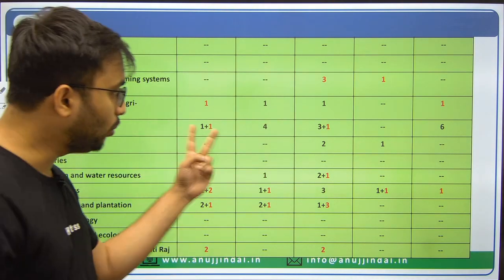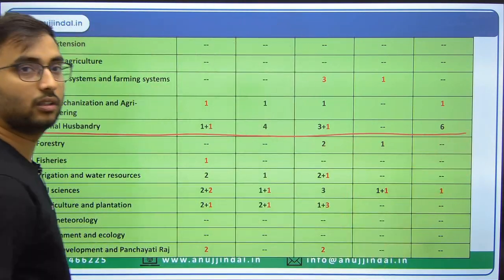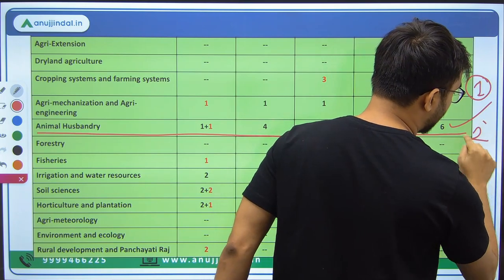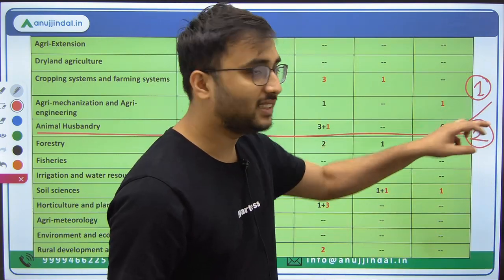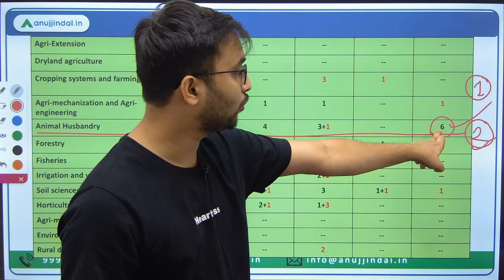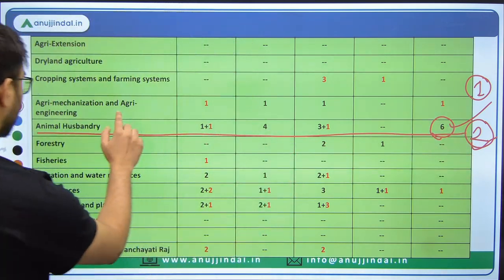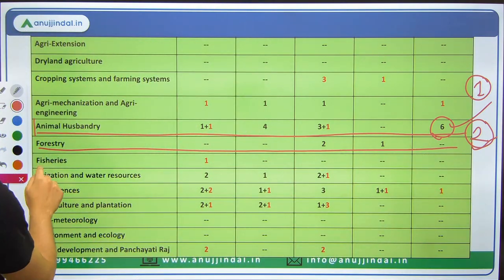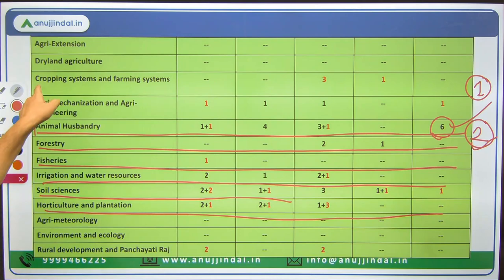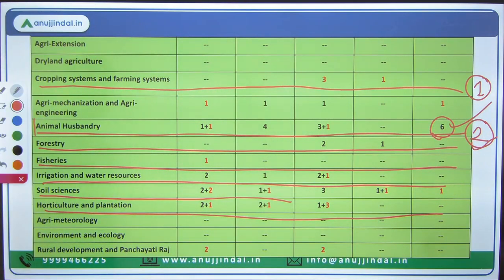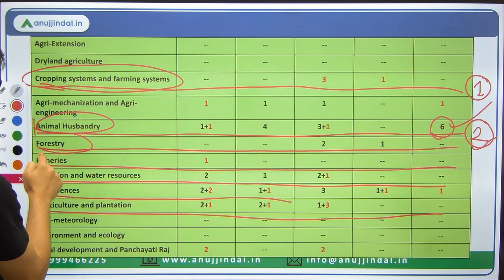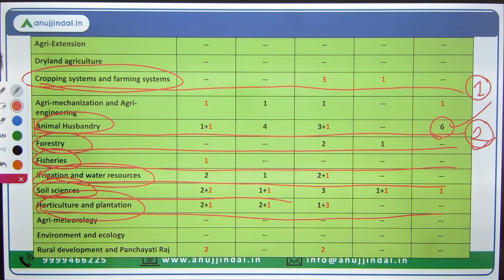In the static part for ARD, important topics include: Agronomy, Agro-climatic zones, Seeds. For animal husbandry — it is a very frequently asked topic. For example in 2022, one passage was on poultry and another on swine pigs — 3 questions from each passage, totaling 6 questions for 2 marks each — that's 12 marks just from animal husbandry. Important chapters to focus on: Animal husbandry, Forestry, Fisheries, Irrigation, Soil science, Horticulture, and Cropping systems and Farming systems.